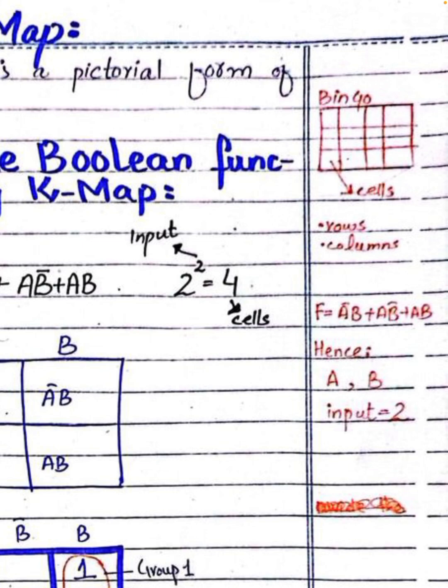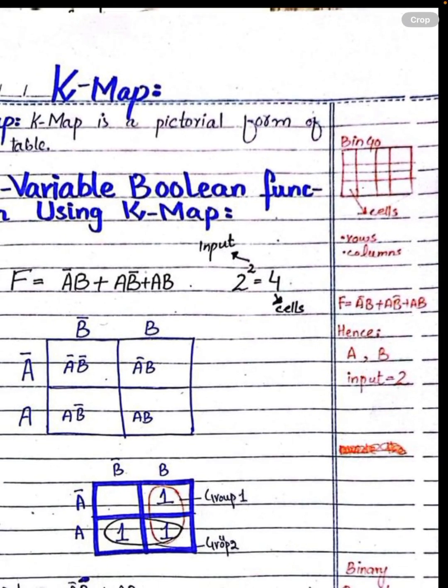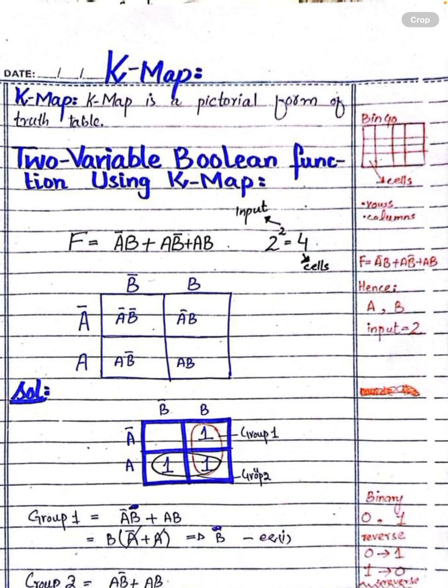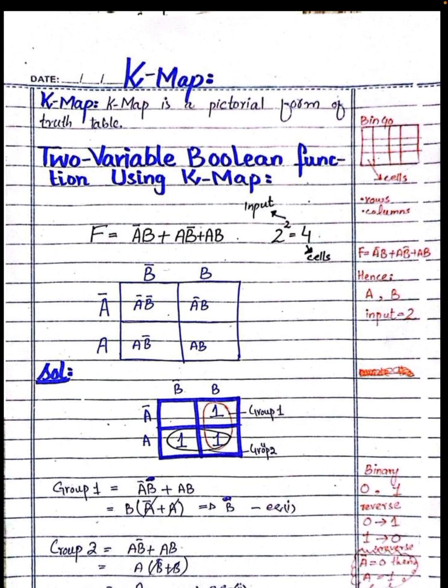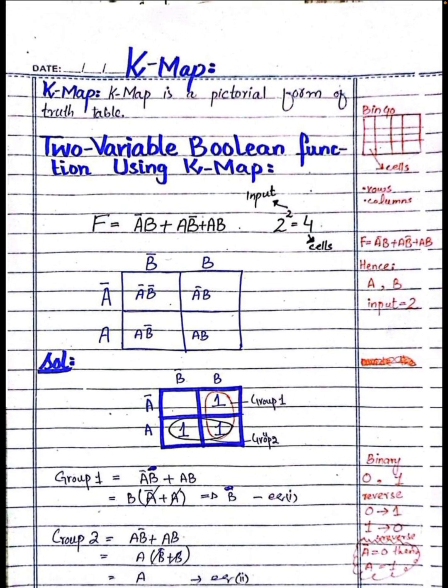As we can see, KMAP consists of rows and columns. Here we will study two-variable Boolean functions using KMAP. The function given is: f equals a-bar b plus a b-bar plus a b.